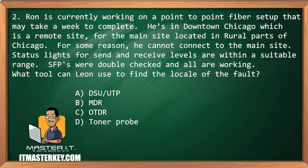Ron is currently working on a point-to-point fiber setup that may take a week to complete. He is in downtown Chicago, which is a remote site for the main site located in rural parts of Chicago. For some reason he cannot connect to the main site. Status lights for send and receive levels are within a suitable range. SFPs were double-checked and are all working. What tool can Leon use to find the locale of the fault? DSU, MDR, OTDR, toner probe.